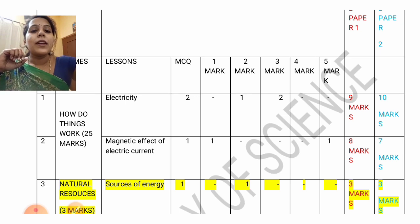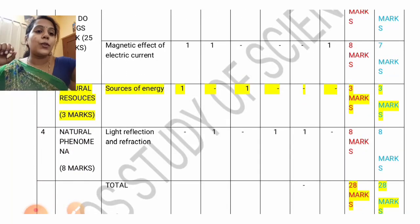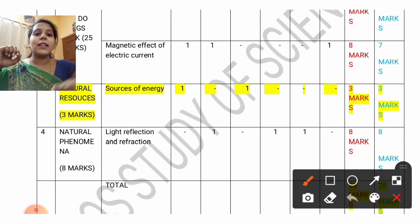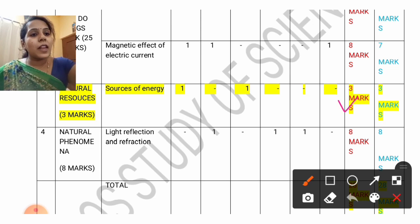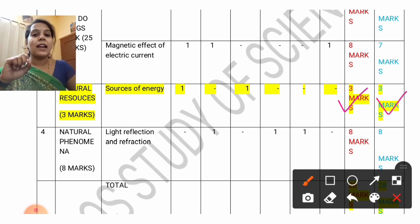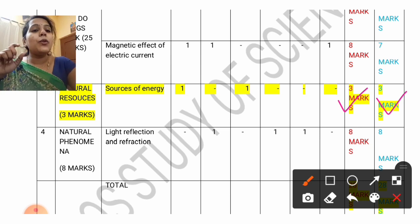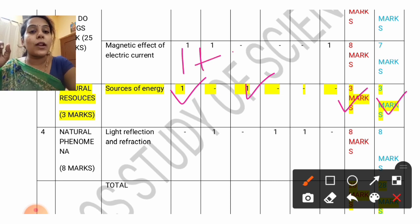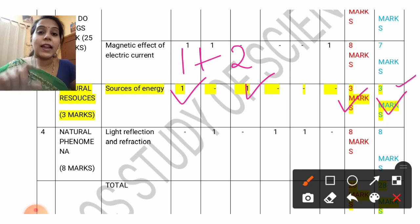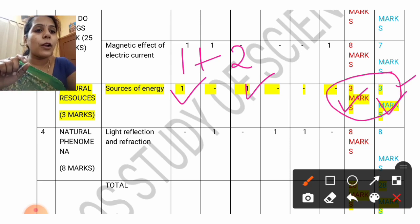Next, Sources of Energy lesson. Model paper 1 has 3 marks allotted for this lesson and model paper 2 also has 3 marks for this lesson. In model paper 2, there is 1 MCQ and 1 two-mark question — so 1 plus 2 equals totally 3 marks. The weightage remains the same in both model question papers.